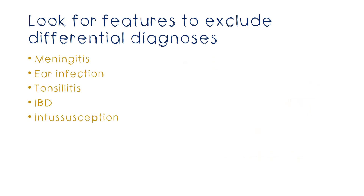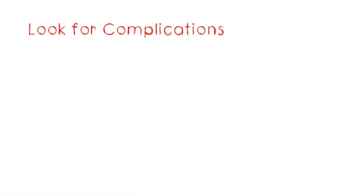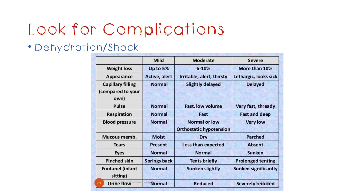The second part of our focused examination is to look for complications. Two of these show important physical signs, and this part is really important because it also carries an integral part of management. First and foremost, you have to know how to assess dehydration. There are three types: mild, moderate, and severe. Mild dehydration doesn't have any abnormal features; it's more of a subclinical dehydration, and the weight loss due to dehydration is only about 5% of the previous weight.